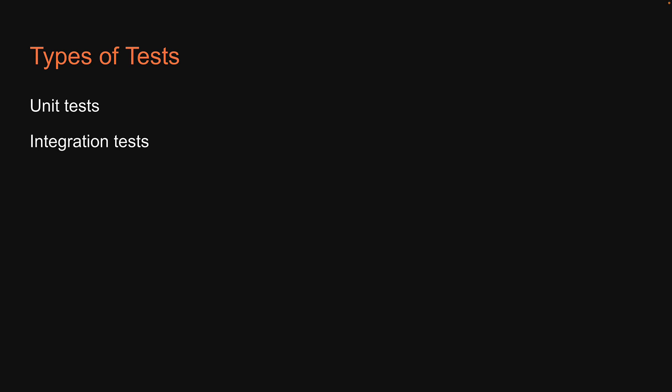Welcome back. In this video, let's take a look at the different types of automated tests. It is essential to understand there are different types of tests and each type serves a different purpose. Typically, you come across three types of tests: unit tests, integration tests, and end-to-end tests.